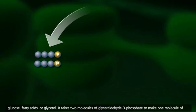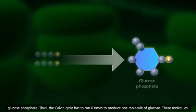It takes two molecules of glyceraldehyde-3-phosphate to make one molecule of glucose-phosphate. Thus, the Calvin Cycle has to run six times to produce one molecule of glucose.